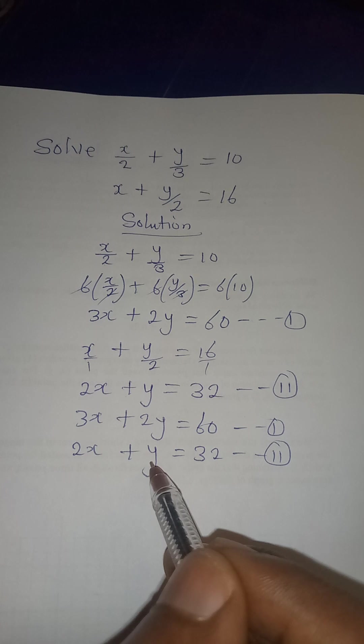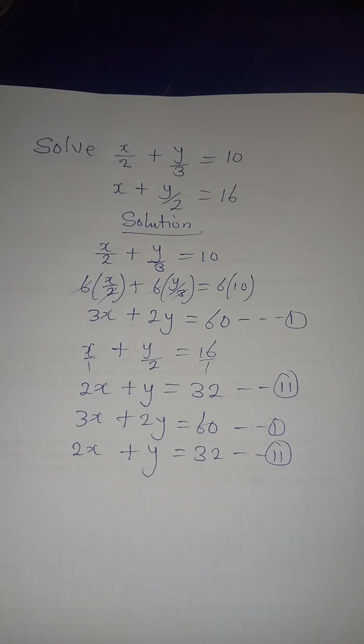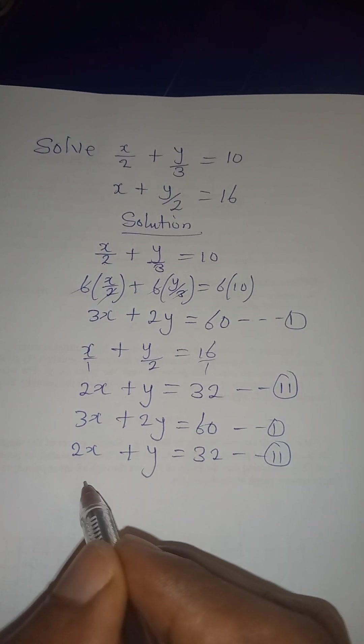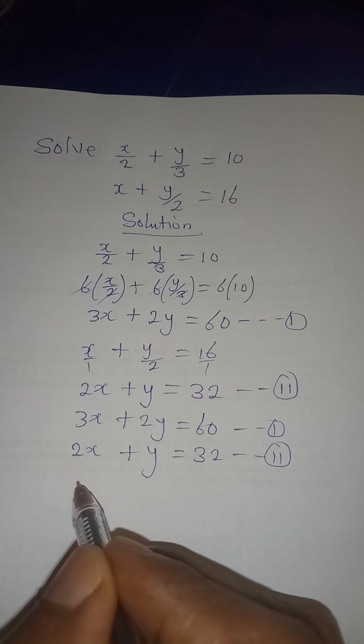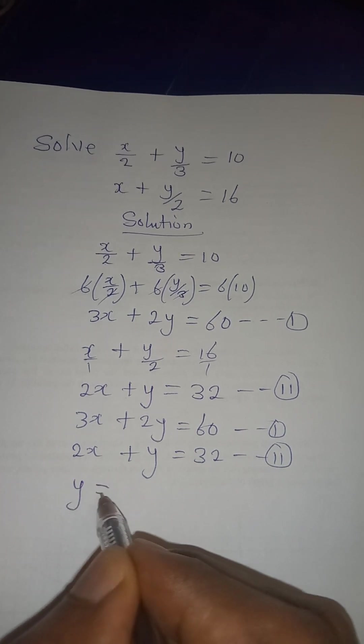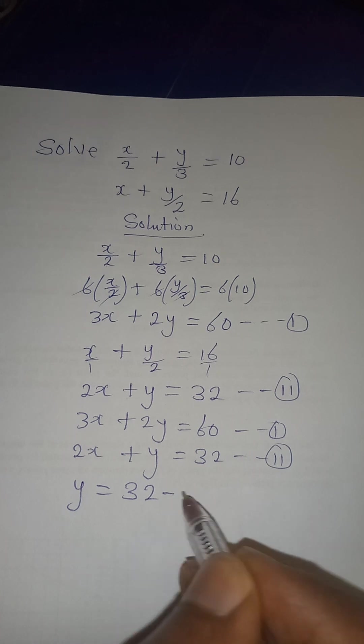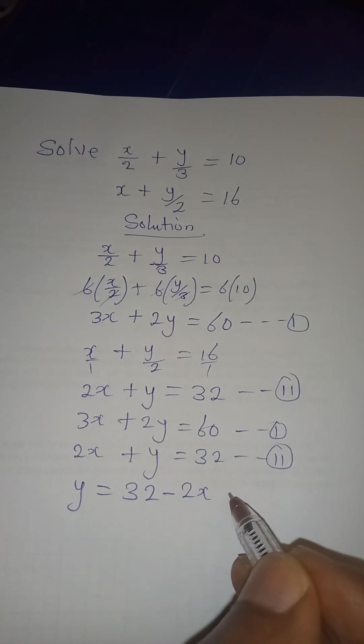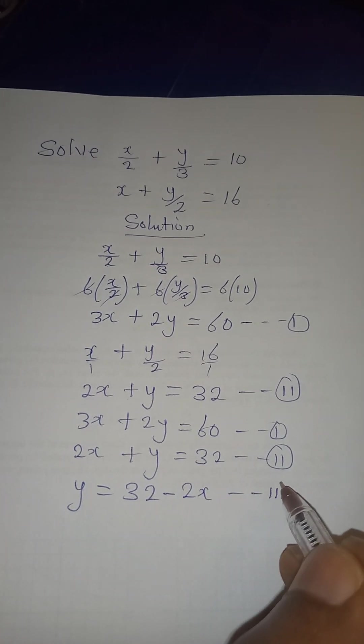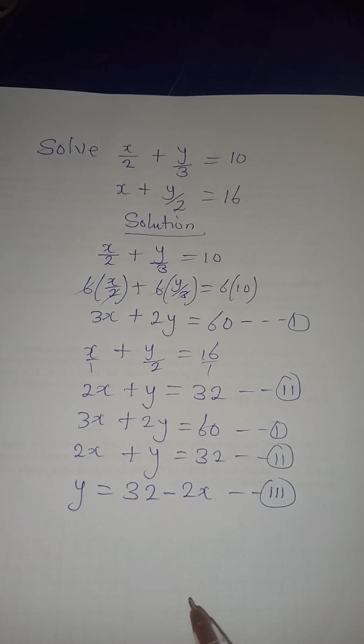And from this equation 2, I can simply make y the subject, so I want to use substitution method. Now if I make y the subject, it will be y equal to 32 minus 2x, and we are going to call this equation 3 because we will need this one as well.